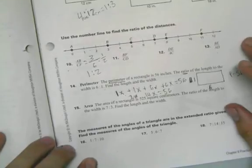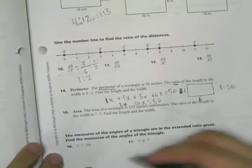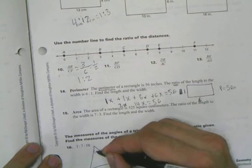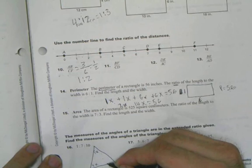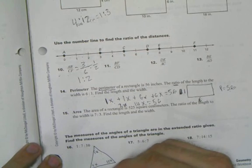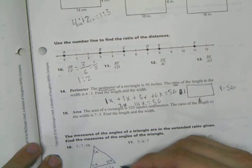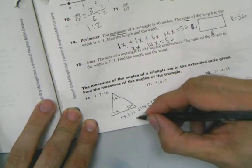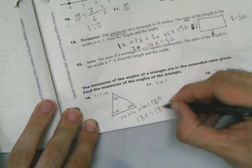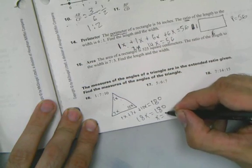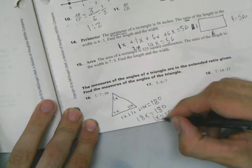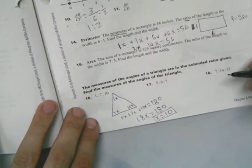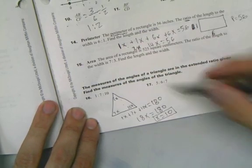And the measures of this triangle's angles are 1 to 7 to 10. That means this is some kind of 1x plus 7x plus 10x. You're going to equal 1x. So we have 1x plus 7x plus 10x equals, put it up like that, equals 180. That's going to be 8 and 18x equals 180. And x equals 10. Nice. And you can do the rest for those.